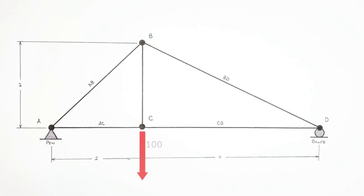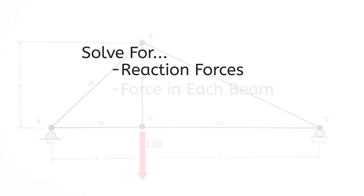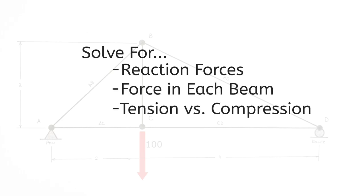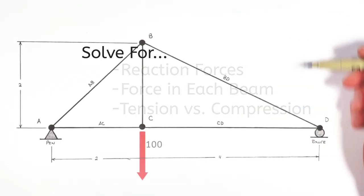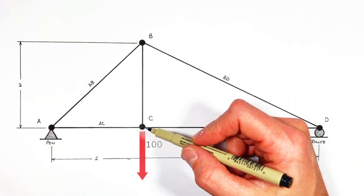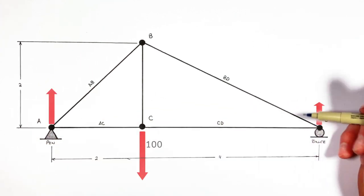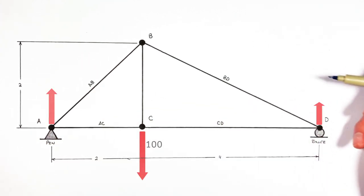Today we're analyzing a truss, which means we're going to solve for the reaction forces holding up the truss, the forces in each beam, and we're going to identify whether each beam is under tension or compression. The challenge with this truss is that the load is offset to the left, which means that each support won't be acting equally on the truss.